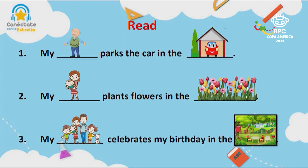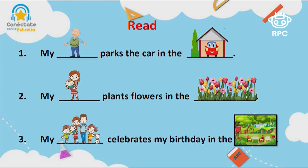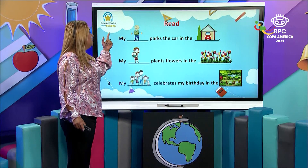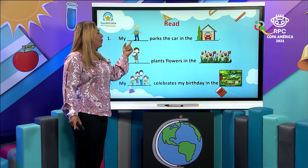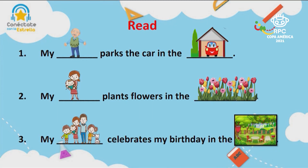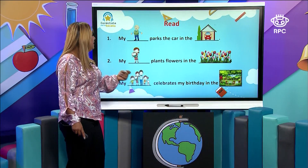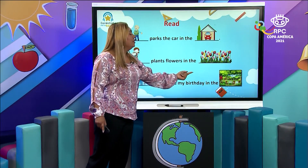Now let's read. When you look at the picture, you say the word. This is grandfather, the garage, mother, garden, family, and the yard. You are going to help me complete the sentence: my grandfather parks the car in the garage, my mother plants flowers in the garden, my family celebrates my birthday in the yard.